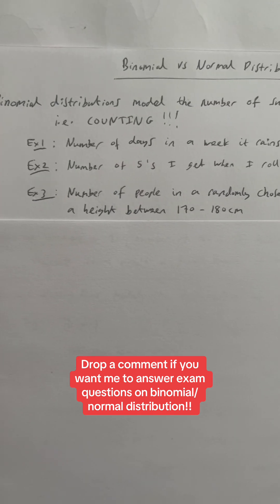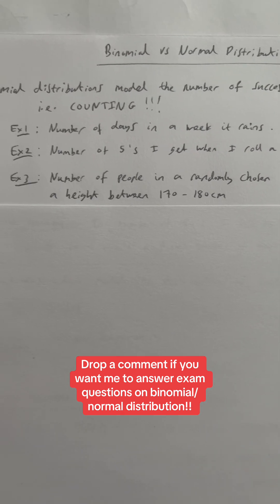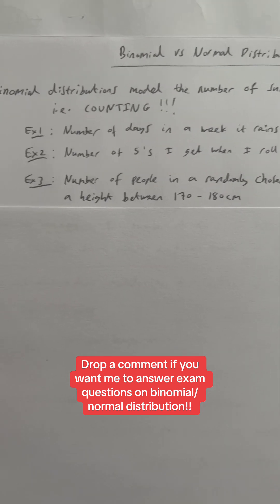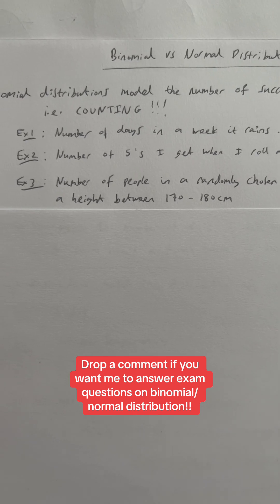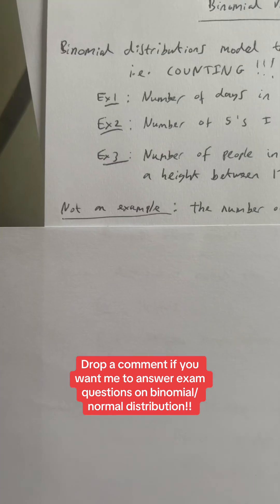You could also use one in this situation. So the number of people in a football team with a height between 170 and 180 centimeters. You've got 11 people in a football team, fixed number of trials, and you're counting how many of them have a height between 170 and 180. That is binomial. You're counting successes out of 11 trials.